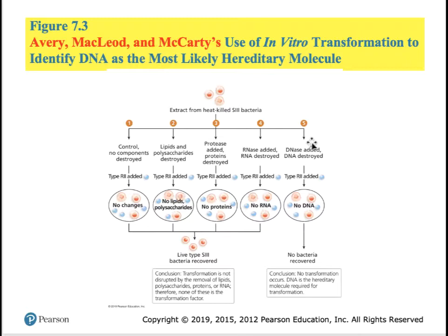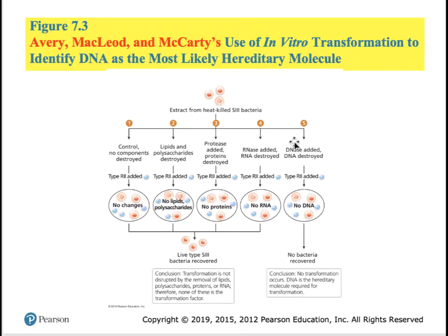It turned out that whenever they removed lipids and sugars, there was no effect on transformation. When they removed proteins, transformation still occurred. When they removed RNA, bacteria were still transformed into killer S-type. But when they treated extracts with DNase — a substance designed to destroy DNA — only then were bacteria no longer transformed. So these three were the first to deduce from a chemical perspective that DNA was the molecule of inheritance.